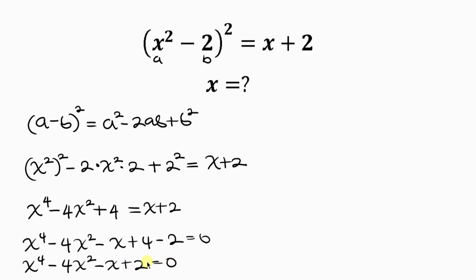So we have a nice quartic equation. Let's see if we can factorize. Notice that x² is common from the first two terms, so we can factor out x², giving x²(x² - 4).